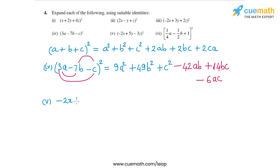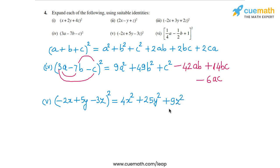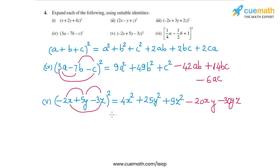The fifth one is (-2x + 5y - 3z)². This equals (-2x)² = 4x², plus (5y)² = 25y², plus (-3z)² = 9z². For the cross terms: 2ab = 2 × (-2x) × 5y = -20xy; then 2bc = 2 × 5y × (-3z) = -30yz; and 2ca = 2 × (-2x) × (-3z) = +12xz (positive). So this is the expanded form of the fifth part.